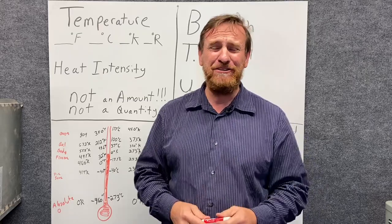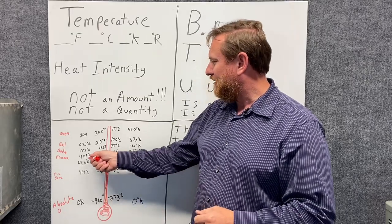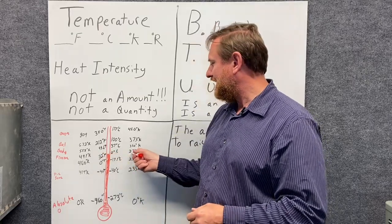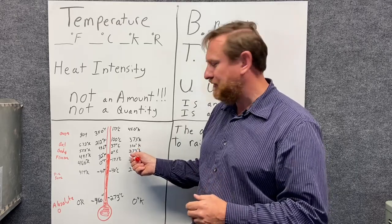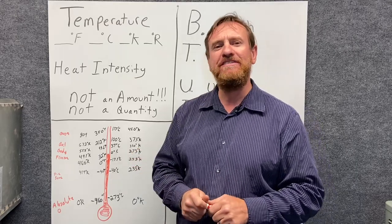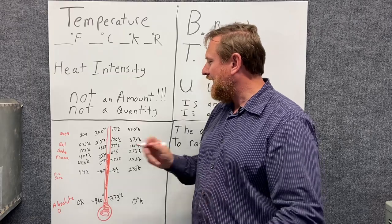Now we can convert that to Rankine, which I don't know that anybody uses Rankine anymore, honestly. But Rankine would be 491 degrees Rankine, and Kelvin, which is the scientific absolute scale, is 273 degrees Kelvin.